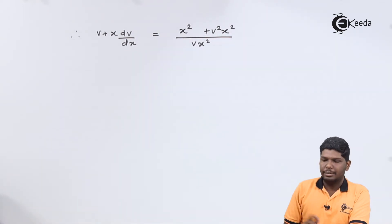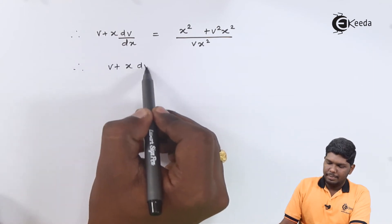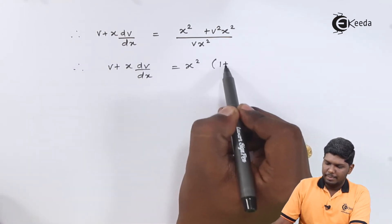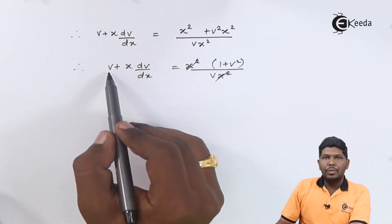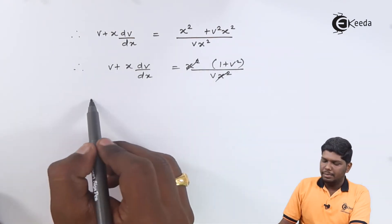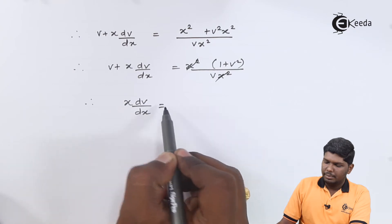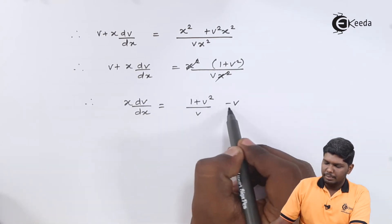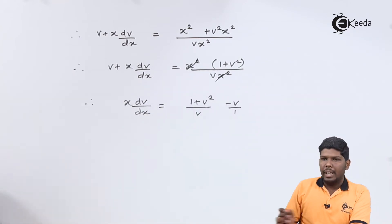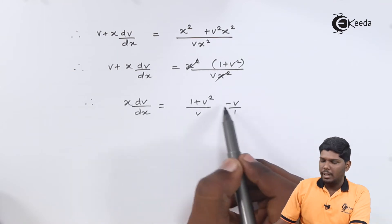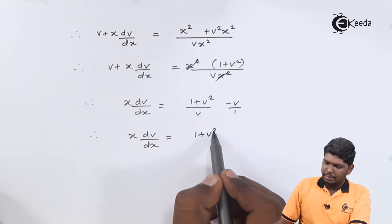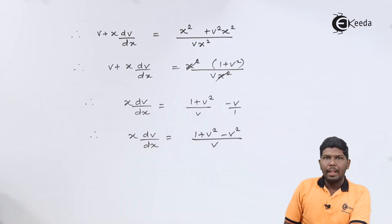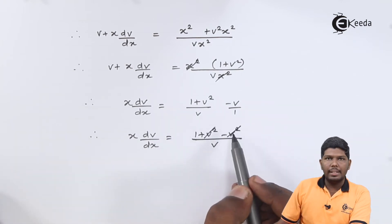In the next step we can transfer this v on the right hand side, and on solving these two fractions we will get (1 + v² - v²)/v. Here as you can see, v² will be cancelled. We have here x(dv/dx) = 1/v.